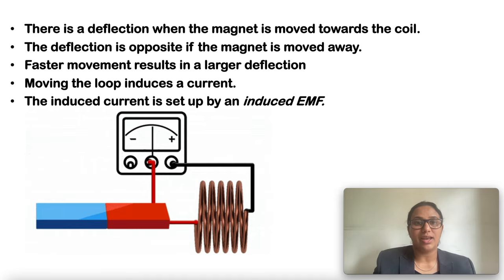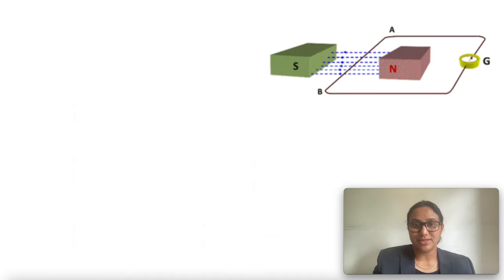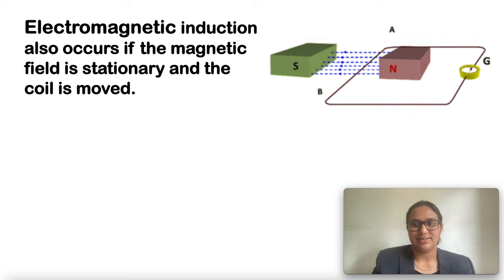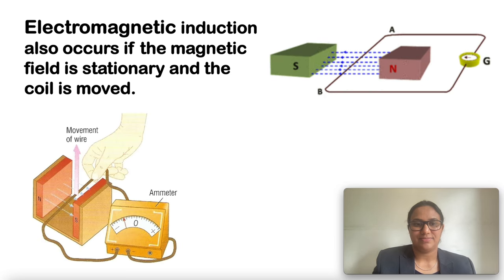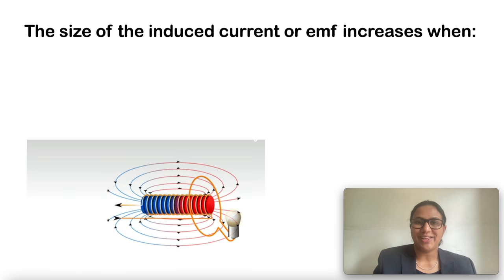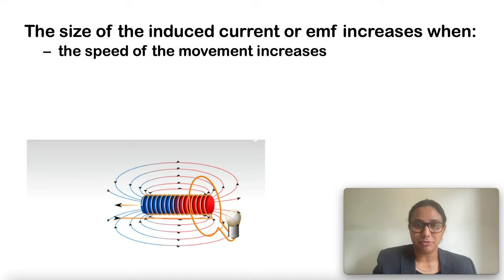EMF is electromotive force. It is observed that electromagnetic induction also occurs if the magnetic field is stationary and the coil is moved, which also produces an EMF in the circuit. How can you increase the size of the induced current or EMF? The size of the induced current or EMF increases when the speed of the movement increases. Faster movement produces increased current or induced EMF.